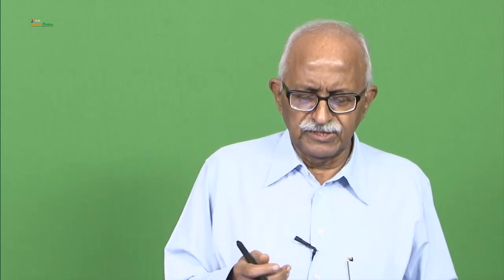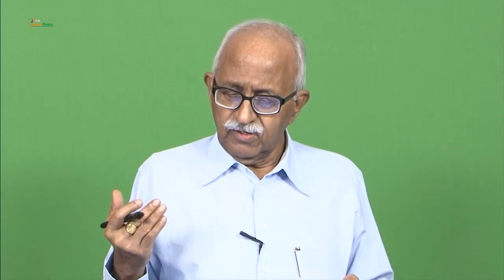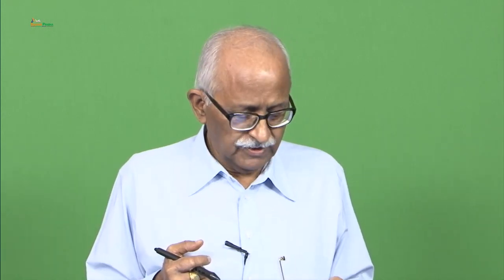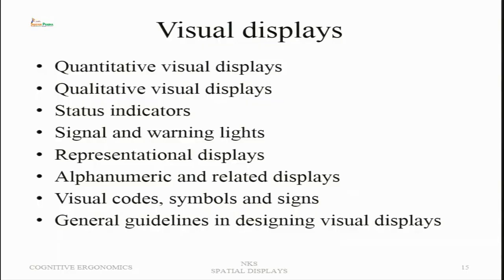An appropriate combination of these variables must be found for particular displays depending on their use context — for example, a mobile phone used both indoors in the dark and outdoors in sunlight. Visual displays can be quantitative, qualitative, status indicators, signal and warning lights, representational, alphanumeric, and visual code symbols and signs. Specific guidelines are required for each type.